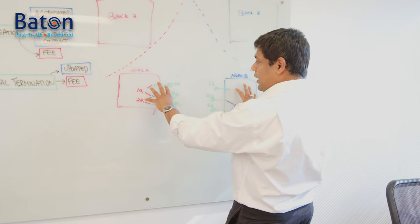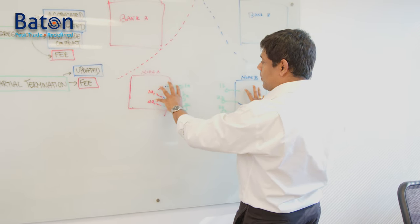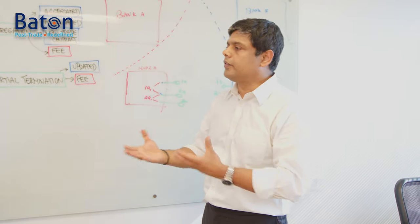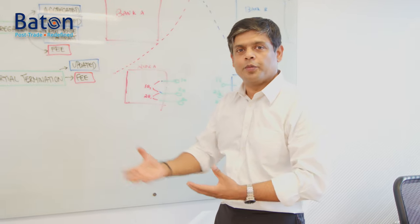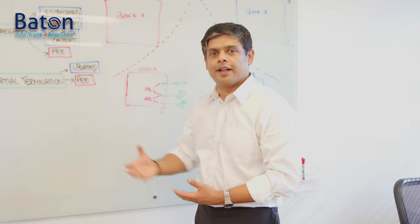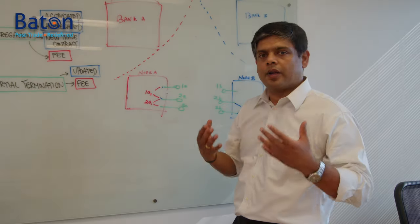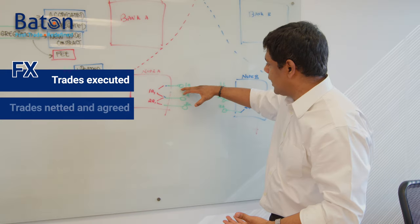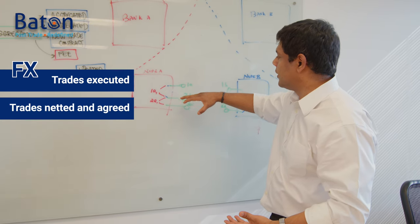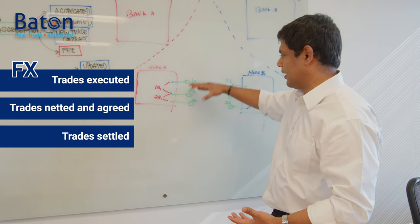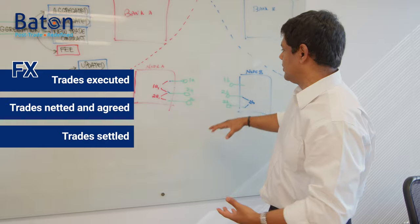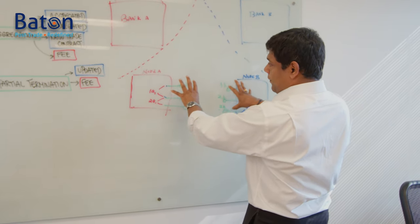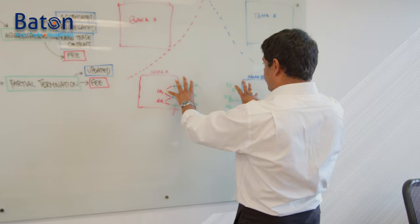You still need to execute a business workflow across these nodes. Let's talk about FX: FX trades are done, the trades are netted, the netted trades are agreed, and then settled. It's a simple three-step process, but this process is done across two different banks — which essentially means it's done across two different nodes.